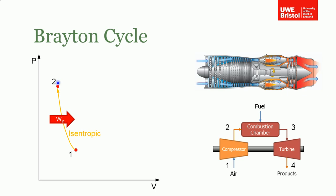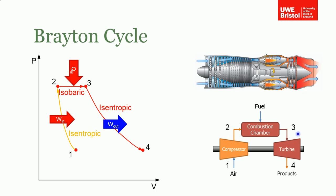From two to three, we add heat by burning the fuel. This is an isobaric process because there can't be any pressure build-up — the cans are open and exhaust products can come out, so it's a constant-pressure, isobaric heat addition. The exhaust gases then flow over the turbine from three to four, and work is extracted isentropically as the pressure drops back down to atmospheric.